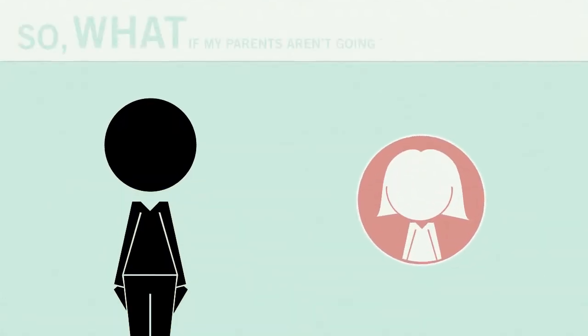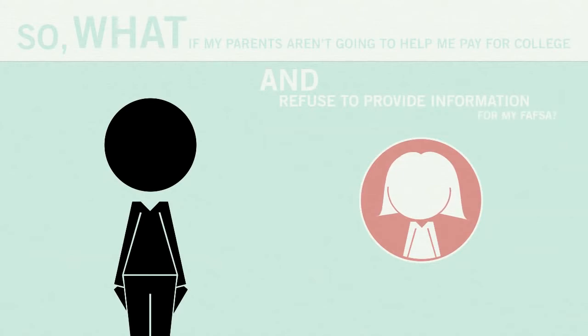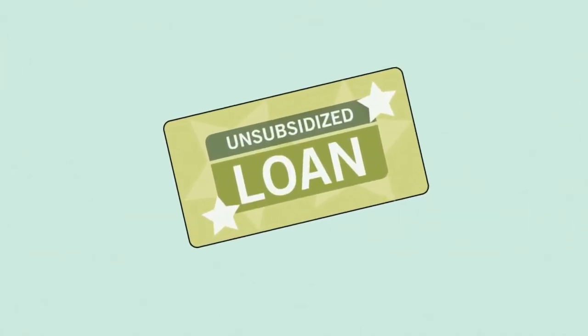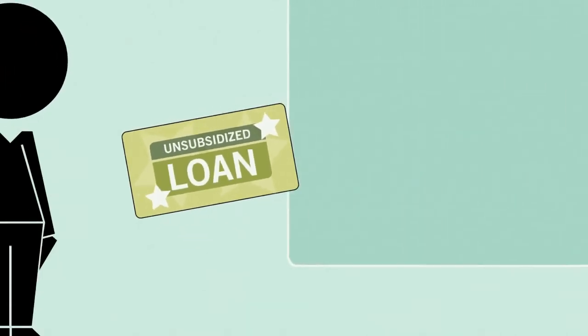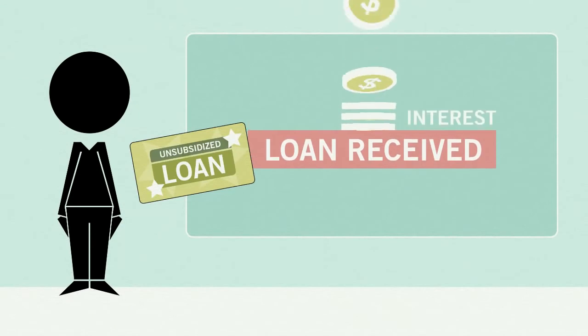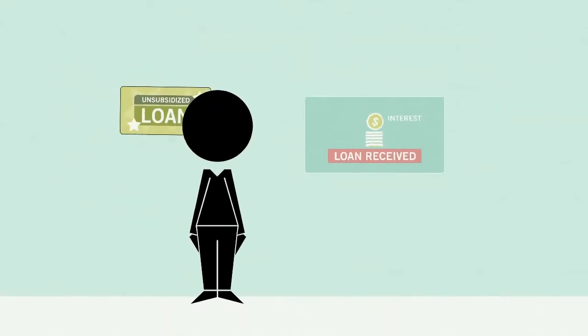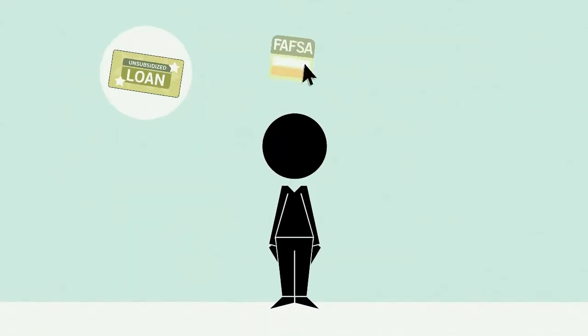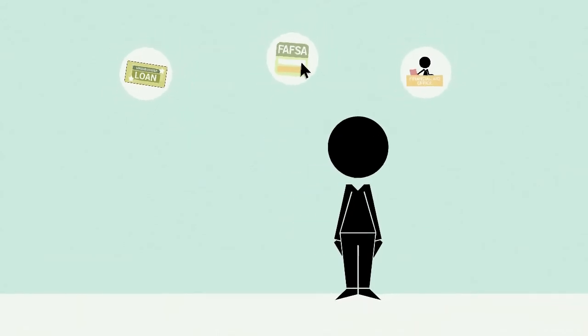So what if my parents aren't going to help me pay for college and refuse to provide information for my FAFSA? If this is the case, the only federal aid you may be able to receive will be an unsubsidized loan, which is a federal student loan that begins accruing interest as soon as you receive your funds. To find out whether you can get the loan, fill out your FAFSA and then speak to the financial aid staff at the college or career school that you wish to attend.